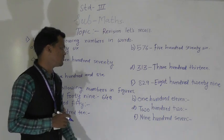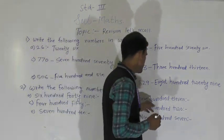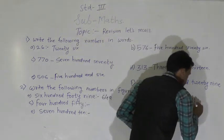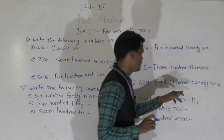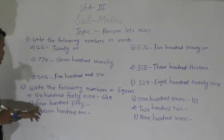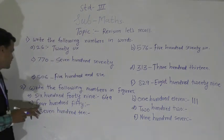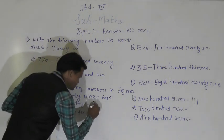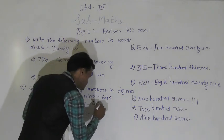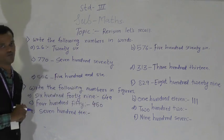Next number: 111. Write the first 1 at the hundreds place, then 1 at tens and 1 at ones. So this number 111 is written. Next number: 450. Write 4 at the hundreds place and 50 means 5 tens at the tens place. So this is 450 in figures.